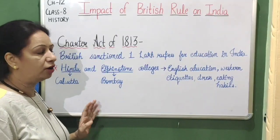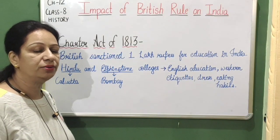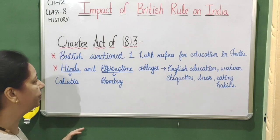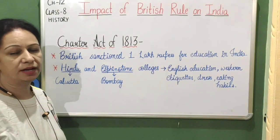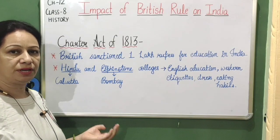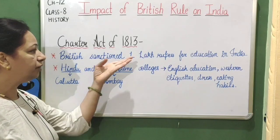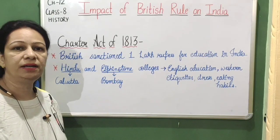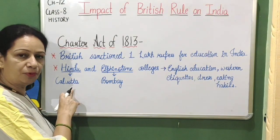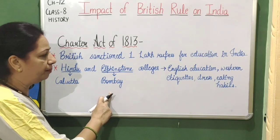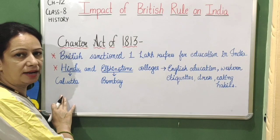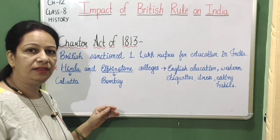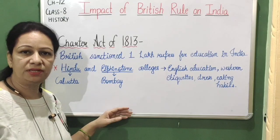Let us start with the Charter Act of 1813. This was the first change in the education system passed by the British government. The British sanctioned one lakh rupees for education in India. During this Charter Act, Hindu College and Elphinstone College were set up in Calcutta and Bombay respectively. These colleges are still present today.